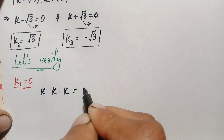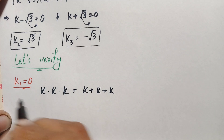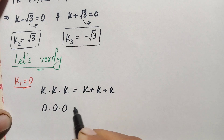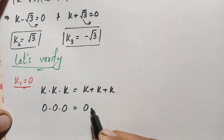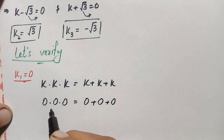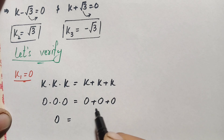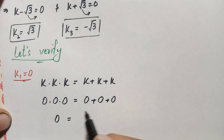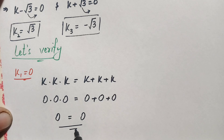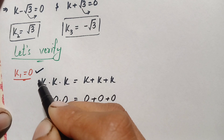Replacing k with zero: zero times zero times zero equals zero plus zero plus zero. Multiplying zero any number of times is always zero, and adding zero any number of times is also zero. Both sides equal zero, so k₁ equals zero is a correct solution.